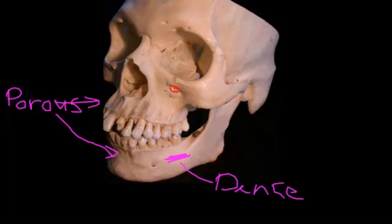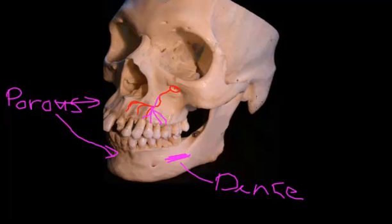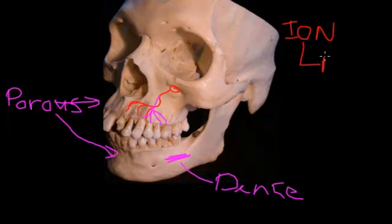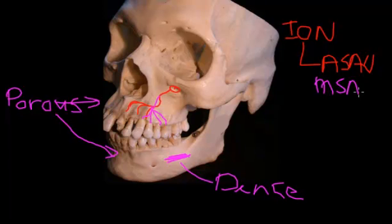A network of small branches run in the bone and supply the anterior teeth. Another little network of nerves coming off the infraorbital supplies the premolar teeth and the first root of the molar teeth. These branches of the infraorbital nerve are the anterior superior alveolar nerve and the middle superior alveolar nerve.